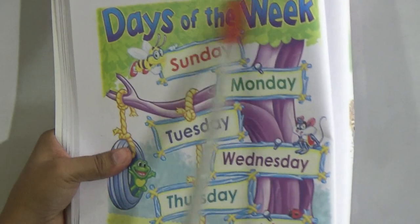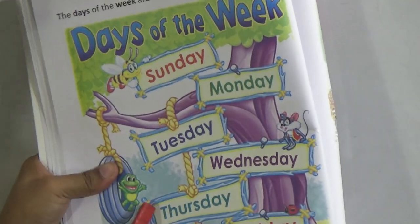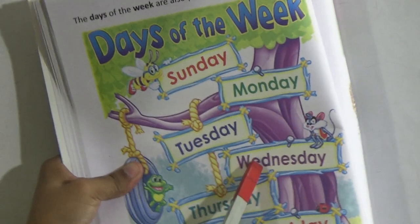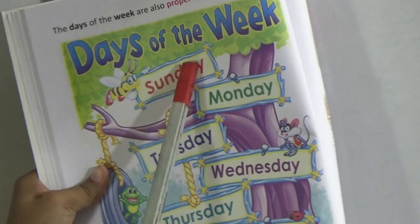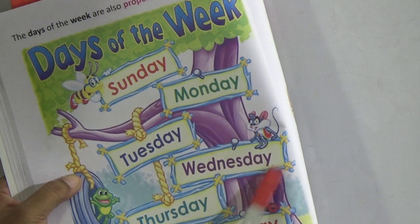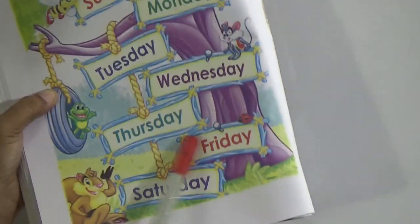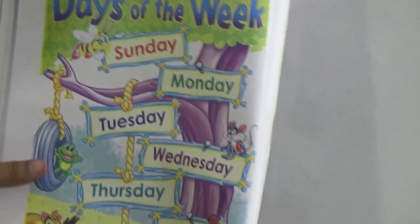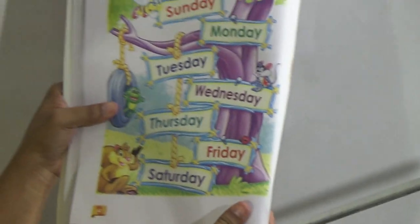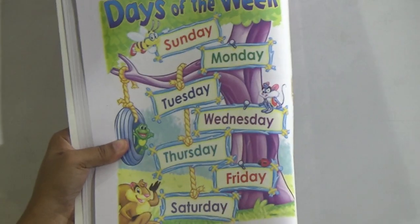Now go to the next page. This is days of the week — there are 7 days in a week and they are also naming words: Sunday, Monday, Tuesday, Wednesday, Thursday, Friday, and Saturday. There are 7 days and they are also naming words.